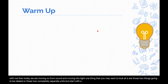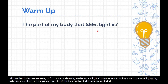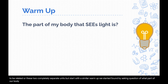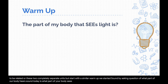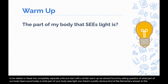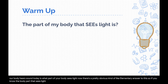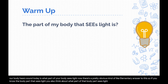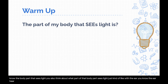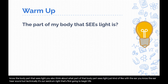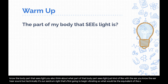Let's start with a similar warm-up. We started sound by asking what part of our body hears sound. Today, our warm-up is: what part of your body sees light? There's a pretty obvious elementary answer, but also think about what specific part of that body part sees light — just like with the ear, technically it's our eardrum that first begins vibrating.